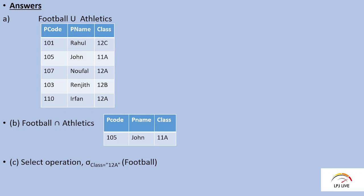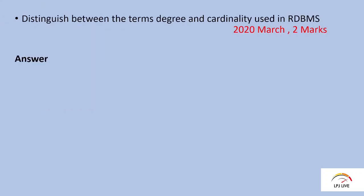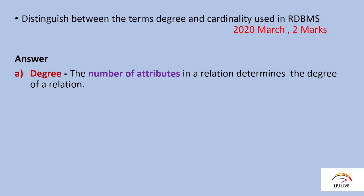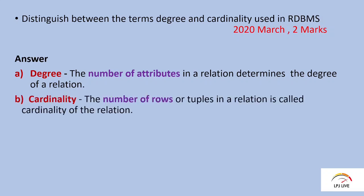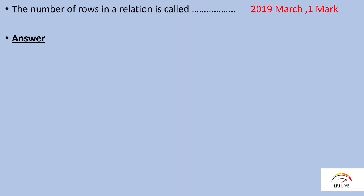The difference between degree and cardinality: the degree is the number of columns in a table, and cardinality is the number of rows. The number of rows in a relation is called the cardinality of that relation.